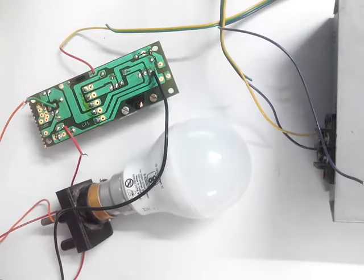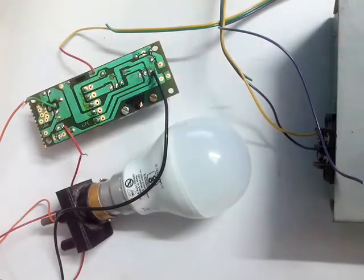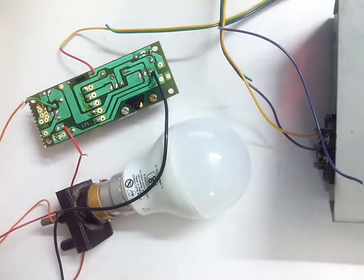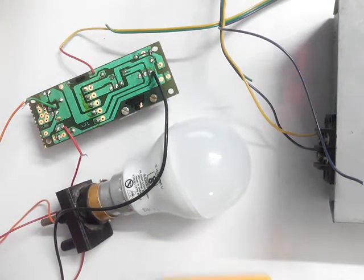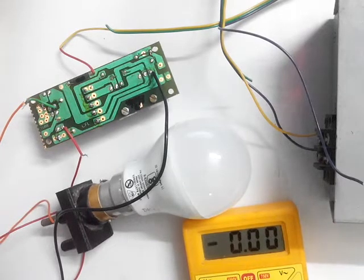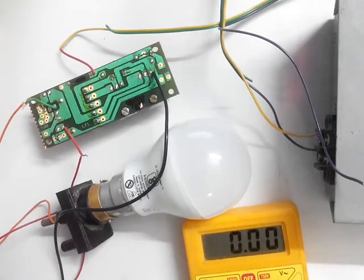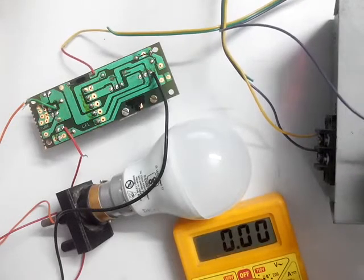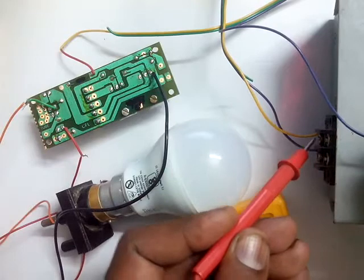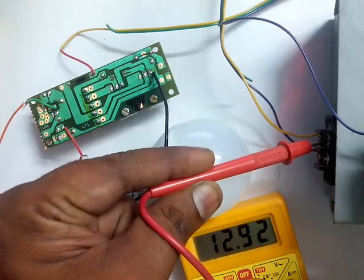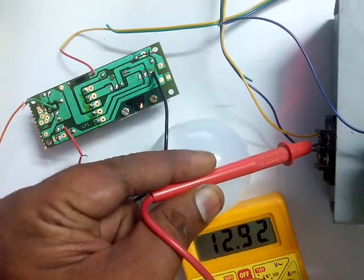We will measure before we begin. Now let's see how much DC output this supply is giving. This is the ground of the supply and this is the positive terminal, so it is giving around 13 volt DC.